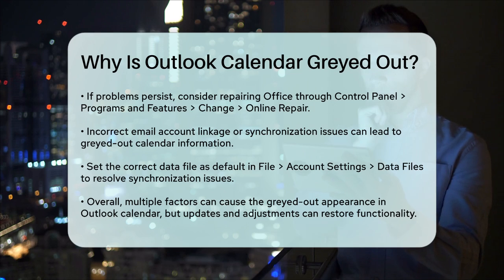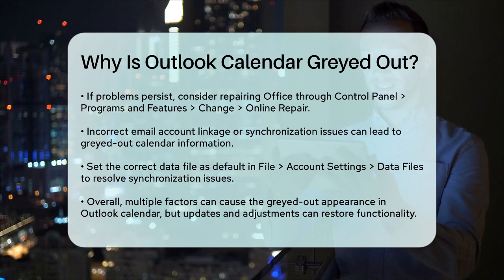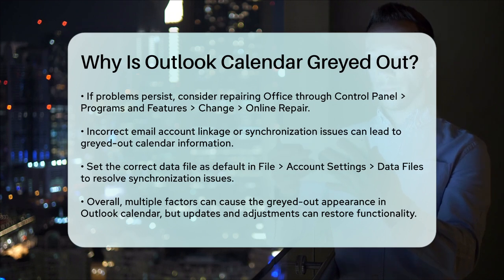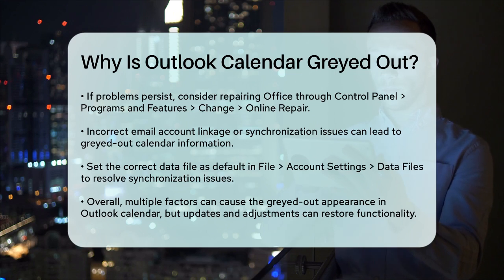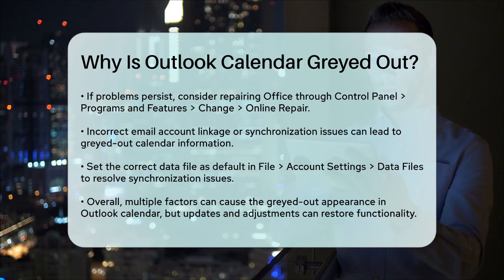In summary, the grayed out appearance in your Outlook Calendar can be due to several reasons, including compatibility issues with newer Exchange Server versions, enabled Shared Calendar improvements, or issues with your account settings. By updating your Outlook, adjusting your account settings, or ensuring your Office applications are up to date, you can resolve these issues and get your calendar back to normal.